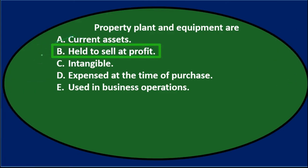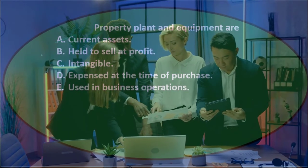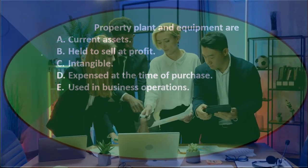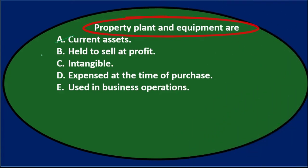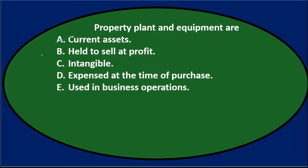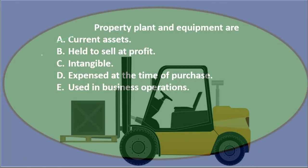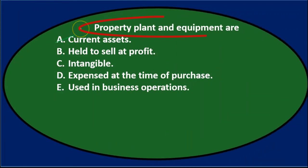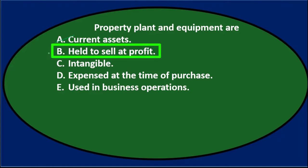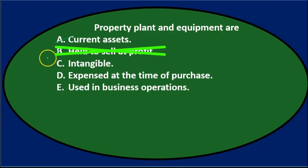B. Held to sell at profit. Now, that's an interesting one because note that the same type of property could be either property, plant, and equipment or inventory, depending on whether it's being held to sell for profit. For example, if we had a forklift to use, it would be property, plant, and equipment. However, if we were planning on selling it at a profit, that'd be more like inventory. So it wouldn't be held to sell for a profit.